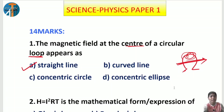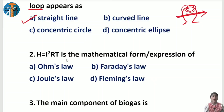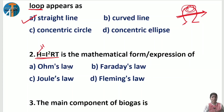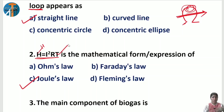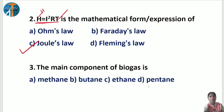Second question: H = I²Rt — what is the mathematical expression or law for this? Here H is heat, which is directly proportional to the square of current, resistance, and time. This is given by Joule's Law of Heating Effect, which is option C. Remember this formula — questions can ask for either the formula or the law name.